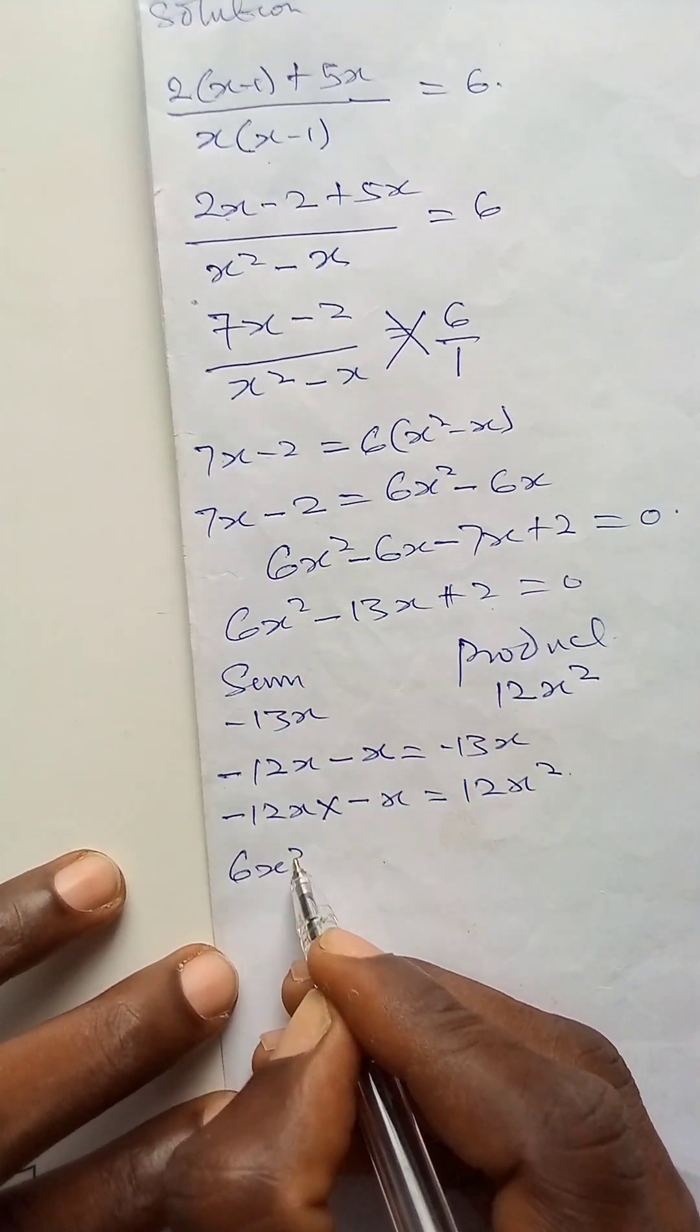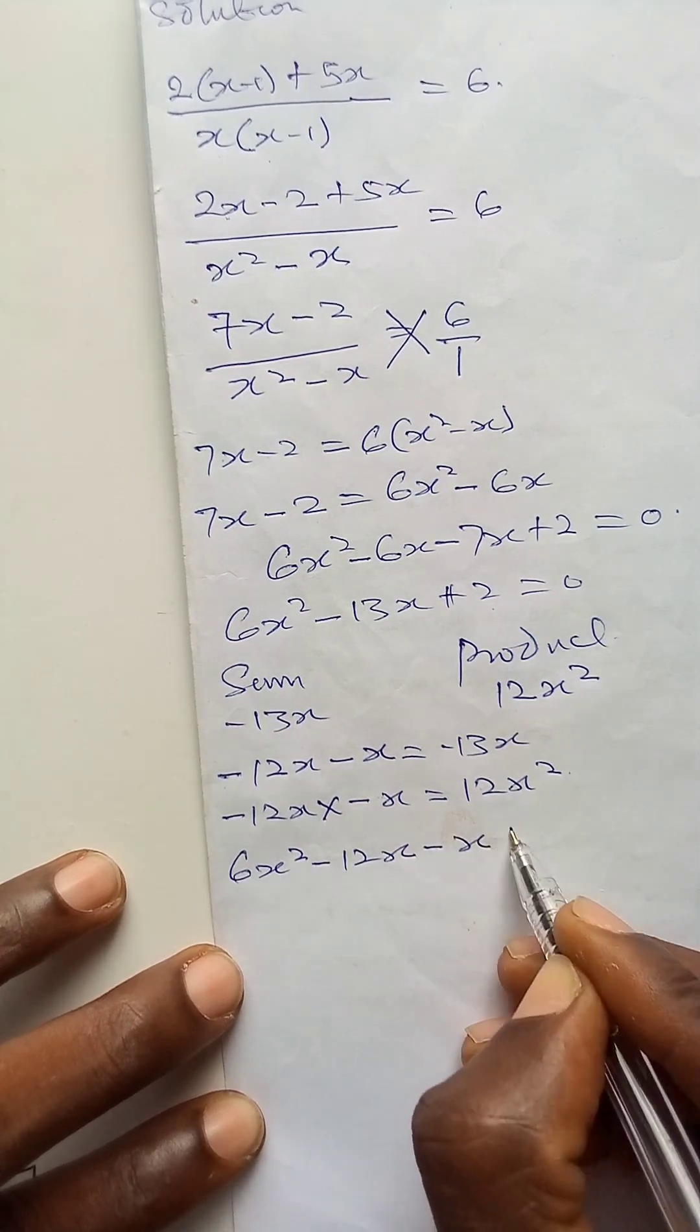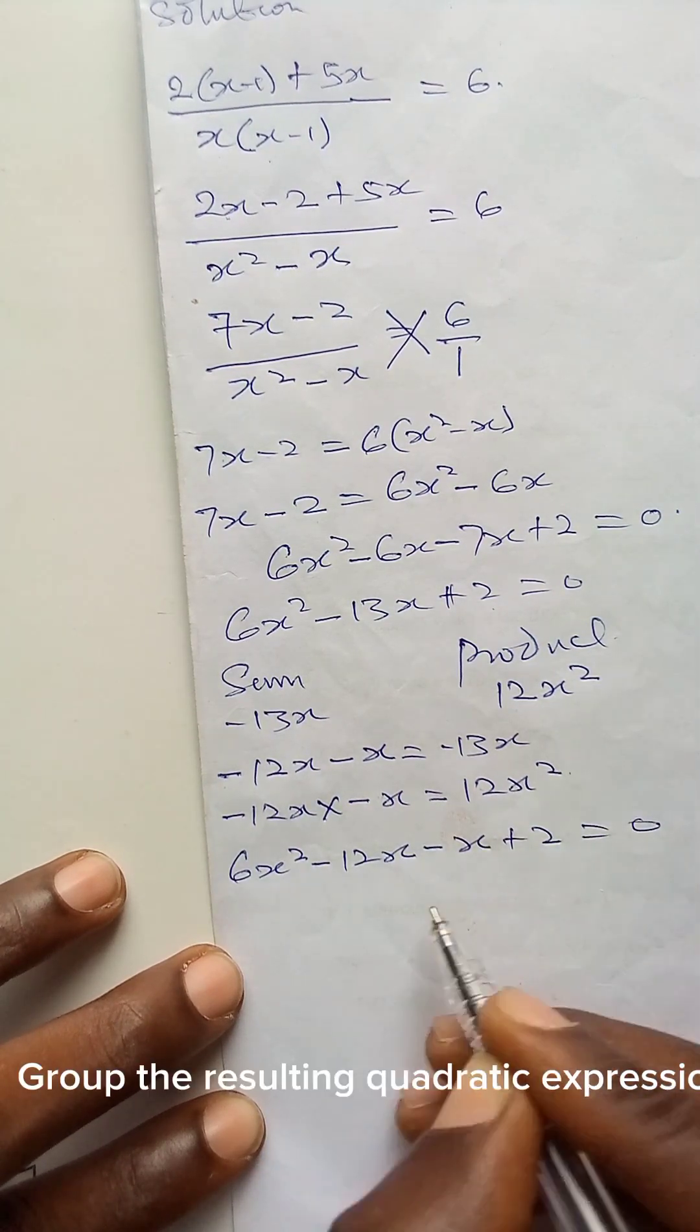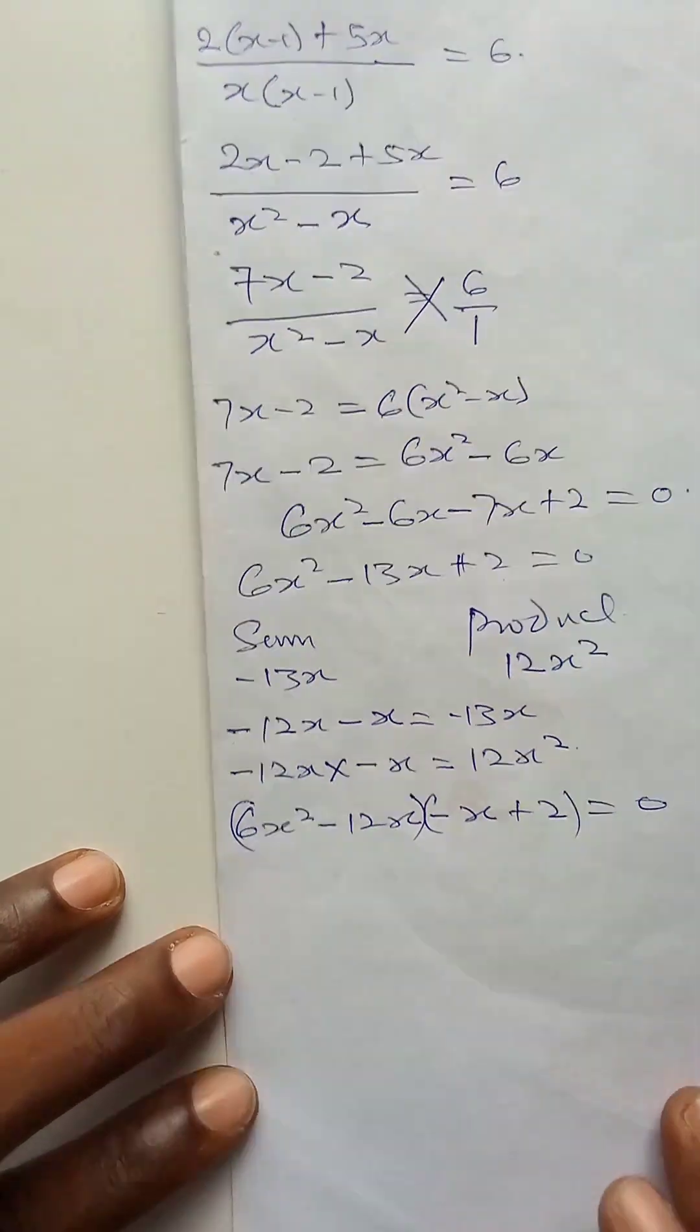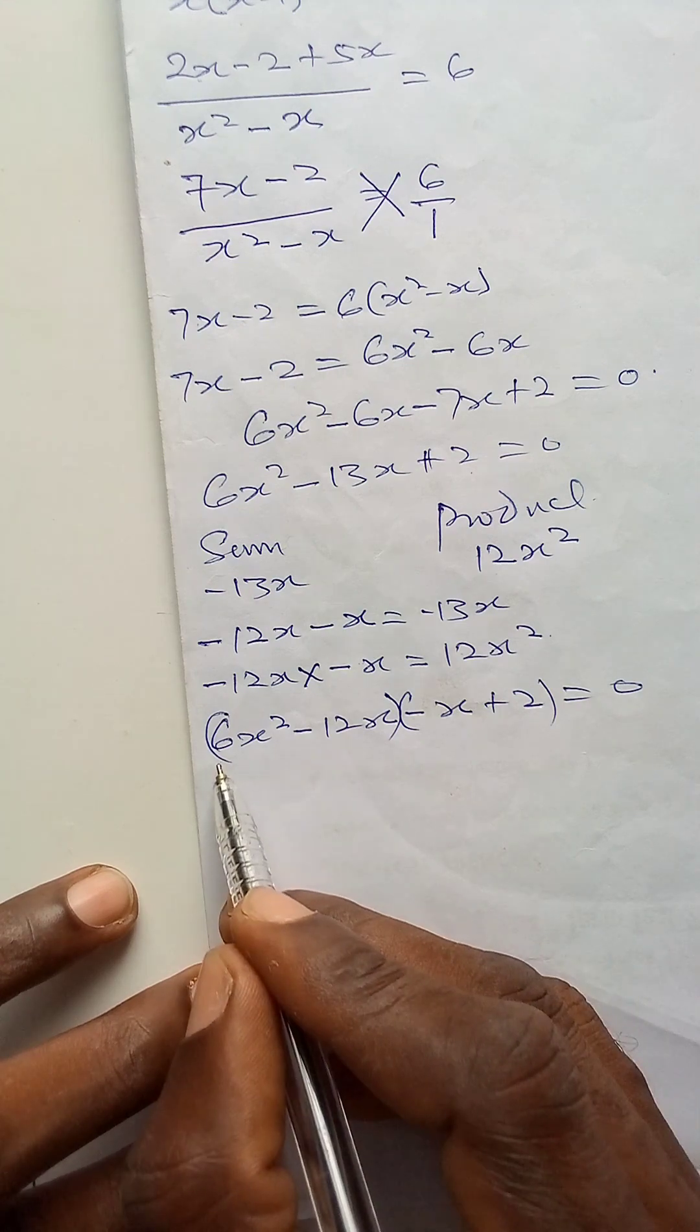That becomes 6x squared minus 12x minus x plus 2 is equal to 0. Then I will group. In the first brackets, the common factor is 6x.